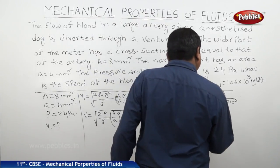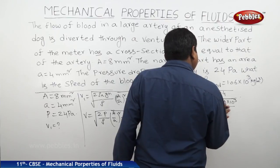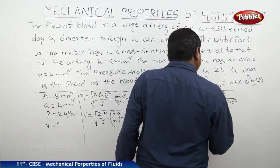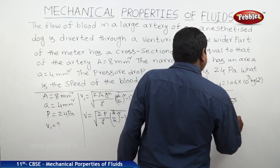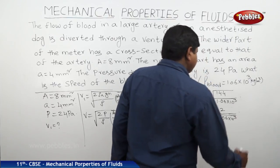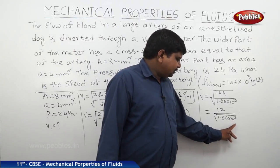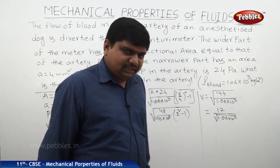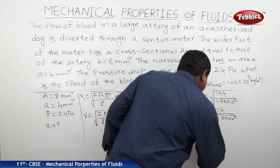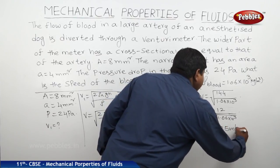So now, this is 12 by square root of 1.06 × 10³. This is 0.106 × 10⁴, that is nothing but 10² under the root. So if we calculate the whole thing, we will get 0.125 m/s.